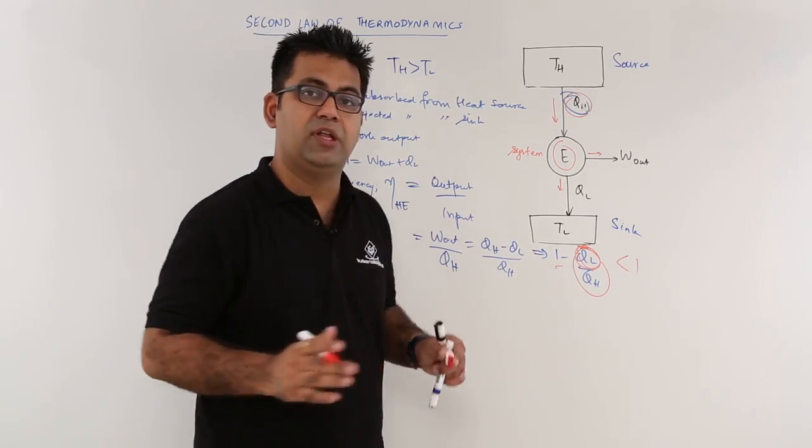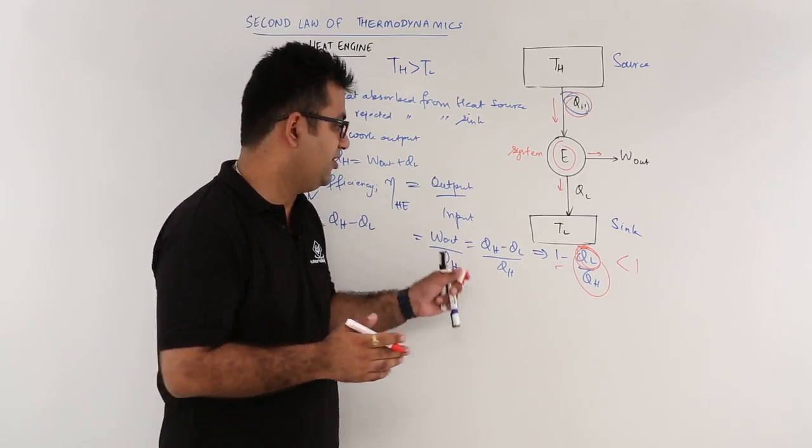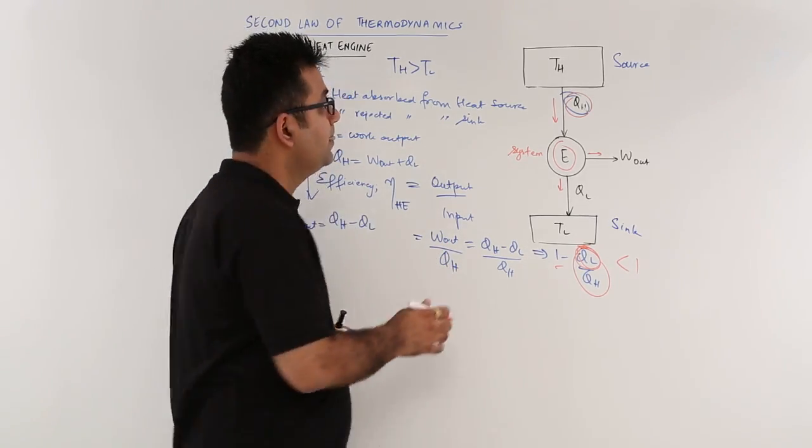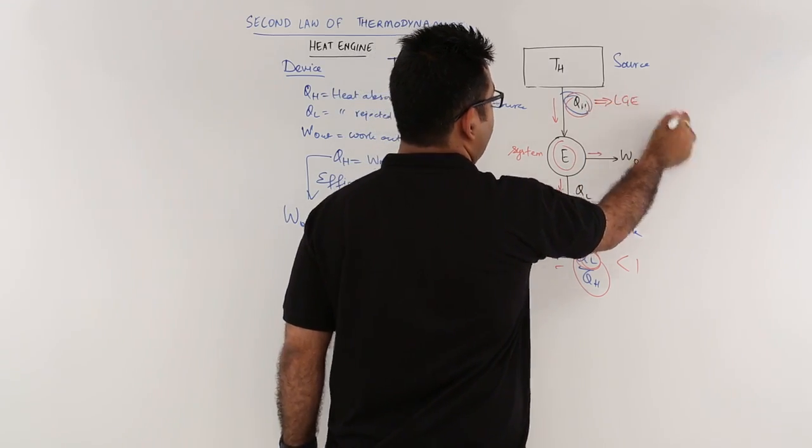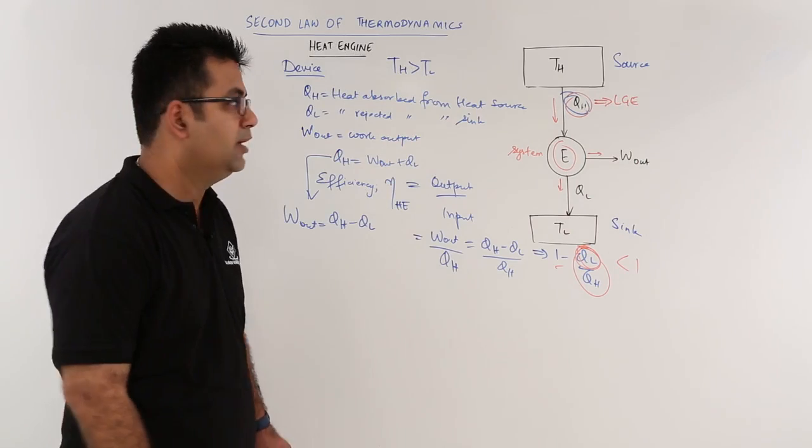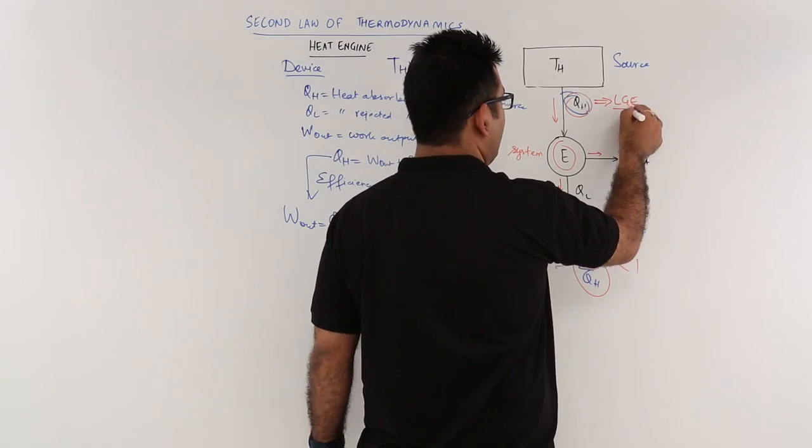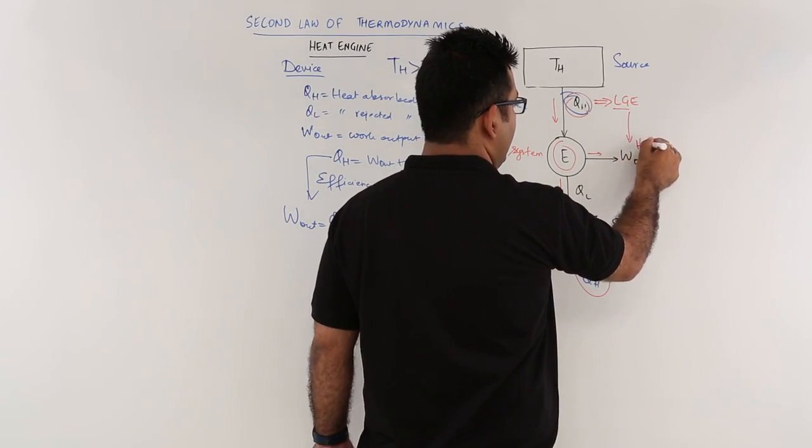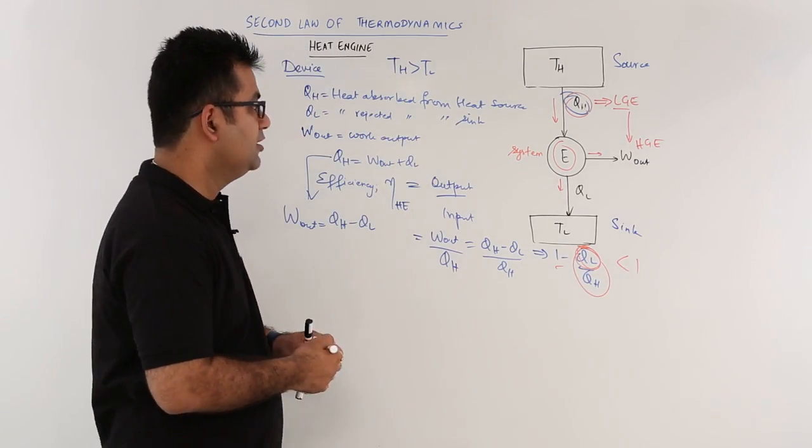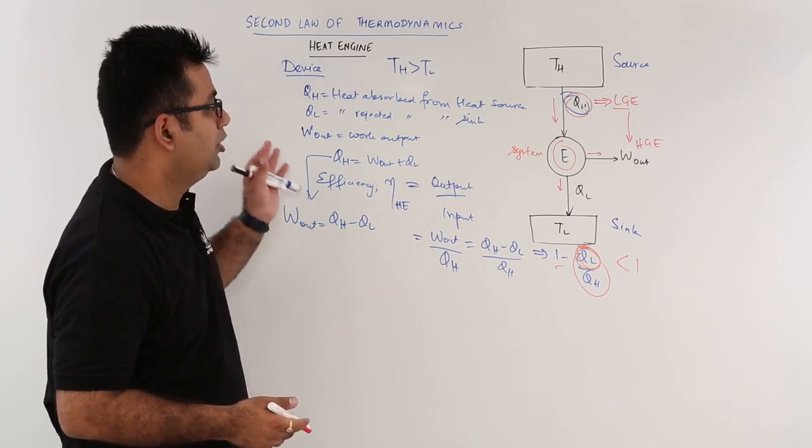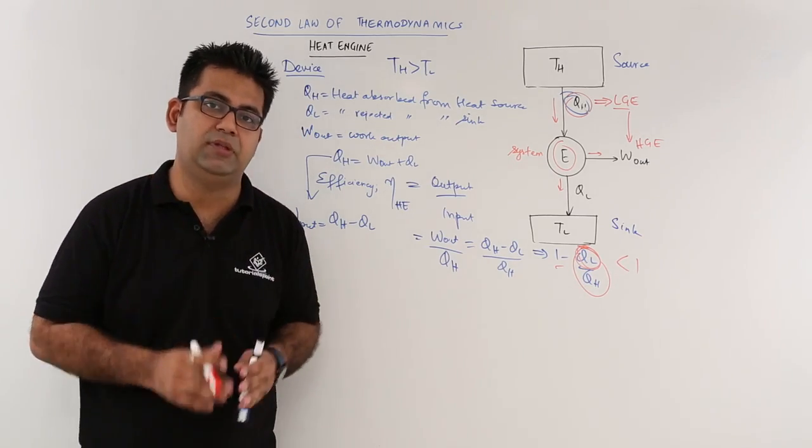Because there are two things. Nothing in this world is 100% efficient. Secondly, this is heat, and heat is a low grade energy. So this low grade energy cannot fully convert into a high grade energy. So this is also one of the limitations. So this is a brief introduction on the topic of heat engine. I hope you understood this.